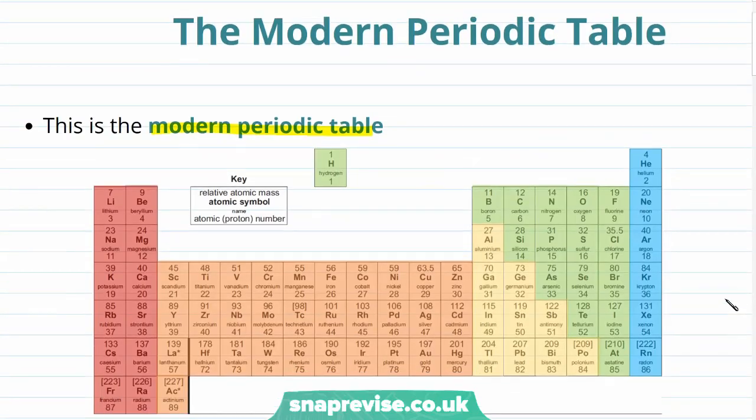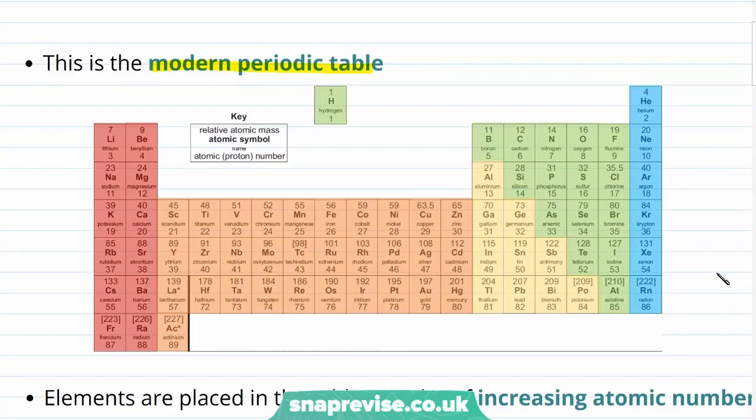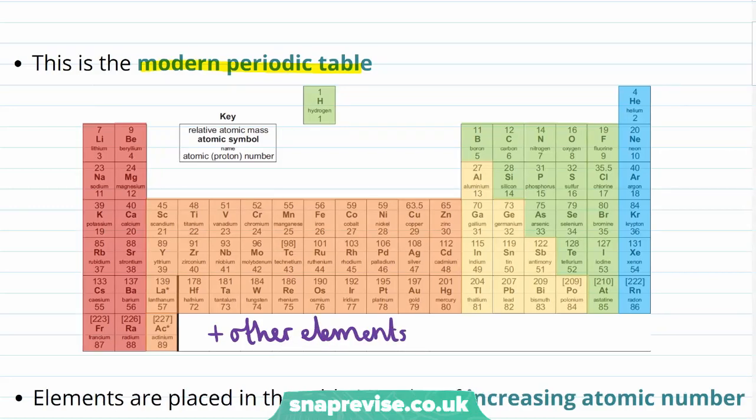A modern periodic table is quite a bit different to the first version. And you can see the modern periodic table in this diagram. For one, we have a lot more elements and there are some other elements that are not shown here, where the total of 118 have been discovered.